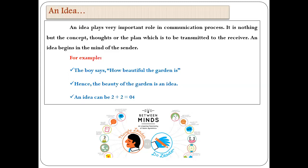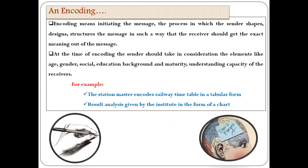The next element of communication is the idea. An idea plays a very important role in the communication process. It is nothing but the concept, thought, or plan which is to be transmitted to the receiver. An idea begins in the mind of the sender — it is the raw or abstract idea which exists in the sender's mind. After the idea exists, it can be transmitted in the form of a message with the help of encoding. For example, 'How beautiful the garden is!' — the beauty of the garden is the idea.